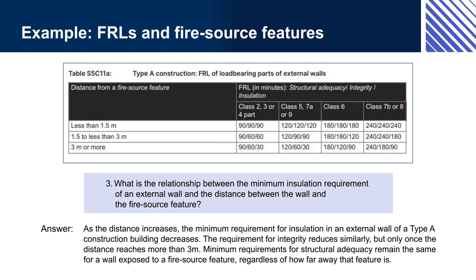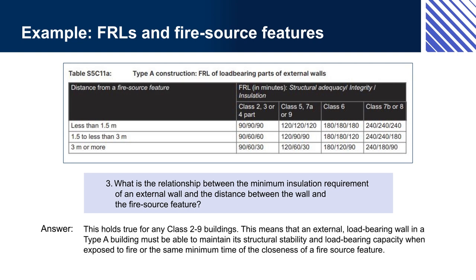Answer 3: As the distance increases, the minimum requirement for insulation in an external wall of a Type A construction building decreases. The requirement for integrity reduces similarly, but only once the distance reaches more than 3 metres. Minimum requirements for structural adequacy remain the same for a wall exposed to a fire source feature, regardless of how far away that feature is. This holds true for any Class 2 to 9 buildings, meaning an external load-bearing wall in a Type A building must be able to maintain its structural stability and load-bearing capacity when exposed to fire for the same minimum time regardless of the closeness of a fire source feature.